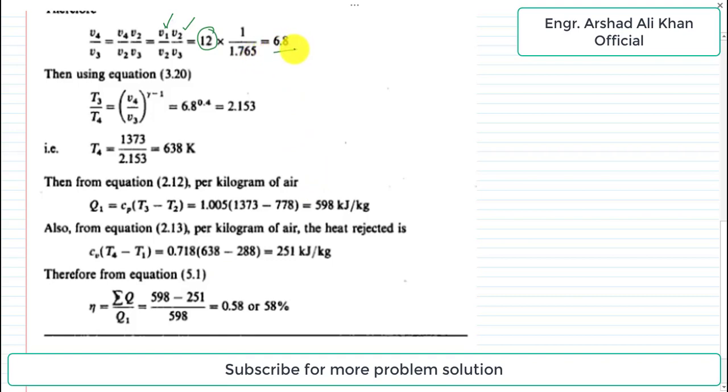To find temperature T4, using equation 3.20 with the compression ratio V4 by V3 of 6.8, the ratio T3 by T4 comes out to 2.153. Simplifying, T4 equals 1373 divided by 2.153, which equals 638 K.